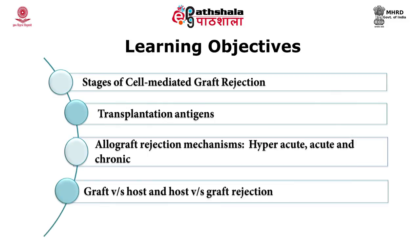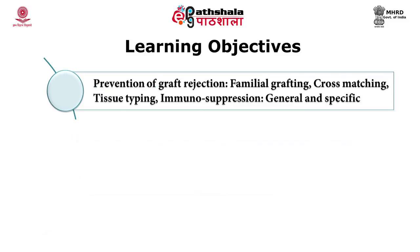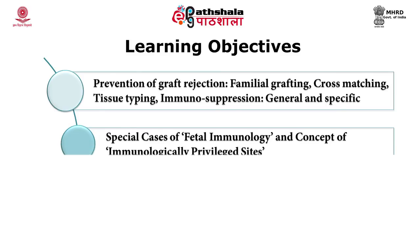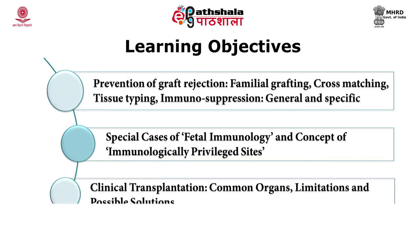We will discuss the issue of host versus graft and graft versus host. After that, we will go for various prevention mechanisms which we can adopt to minimize the rejection procedures. We will also discuss some special cases of fetal immunology and the concept of immunological privileged sites. After that, we will briefly discuss the various organs which are in common transplantation cases, what are the limitations behind them and what are the possible outcomes.